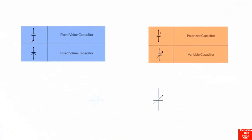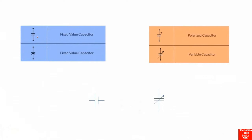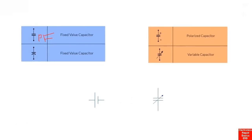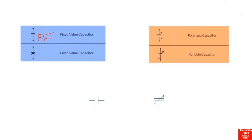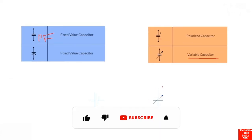Now let's look at capacitor symbols. The first is a fixed-value ceramic capacitor — not a polarized capacitor; we call it a ceramic or pF capacitor. The next is a polarized capacitor with plus and minus, which can be an electrolytic or tantalum capacitor. The third has an arrow indicating it is a variable capacitor — not a fixed value. You can also find another style for variable capacitors; their reference on motherboards can be VR.